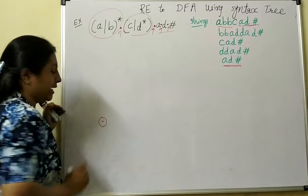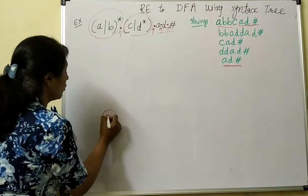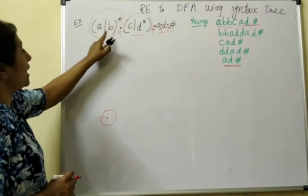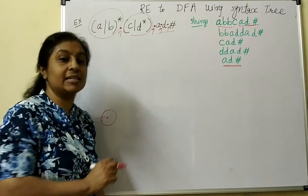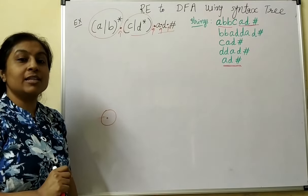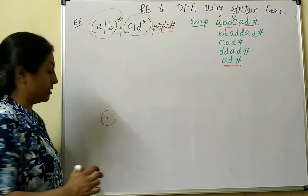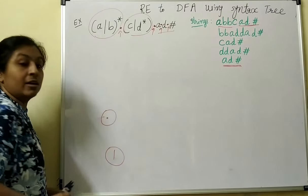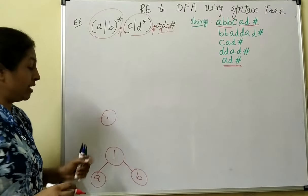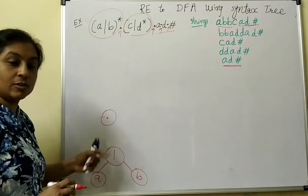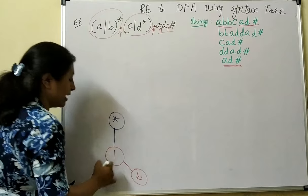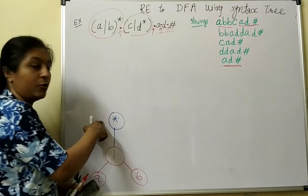Construct a node of concatenation. On the left side we require the result of A union B whole star. Due to brackets, union has higher precedence than Kleene's closure. So first construct a tree of union — it is a binary operator requiring two child nodes A and B. Then construct a node of Kleene's closure on top of this, indicating A union B whole star.